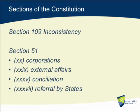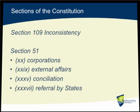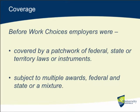Section 109 dealt with inconsistency between the Commonwealth and the states — specifically, where a state law is inconsistent with Commonwealth law, the Commonwealth law prevails to the extent of the inconsistency. Section 51 is the lawmaking power within the Australian constitution, with subsection 20 dealing with the power to make laws with respect to corporations, subsection 29 dealing with the external affairs power, subsection 35 for conciliating disputes between the states in the industrial sphere, and subsection 37 giving states the power to refer lawmaking power to the Commonwealth.